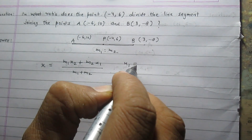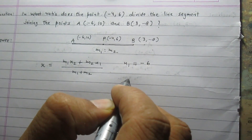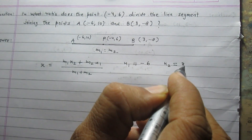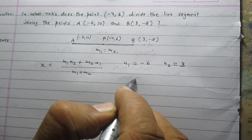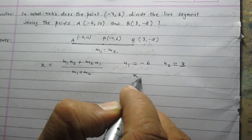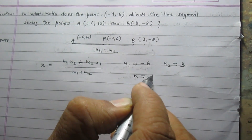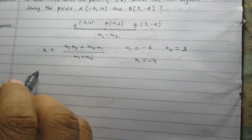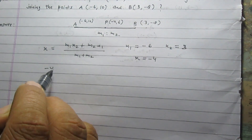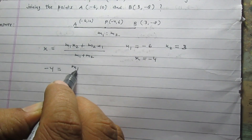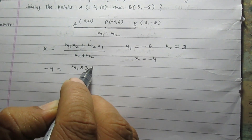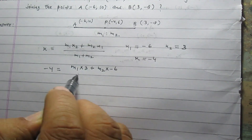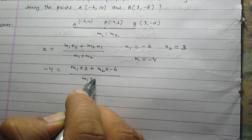Here, x1 is the x-coordinate of point A and it is equal to minus 6. x2 is the x-coordinate of point B and it is equal to 3. And x is the x-coordinate of point P and it is equal to minus 4. After substituting these values in the section formula, we get minus 4 is equal to M1 multiplied by 3 plus M2 multiplied by minus 6, whole divided by M1 plus M2.